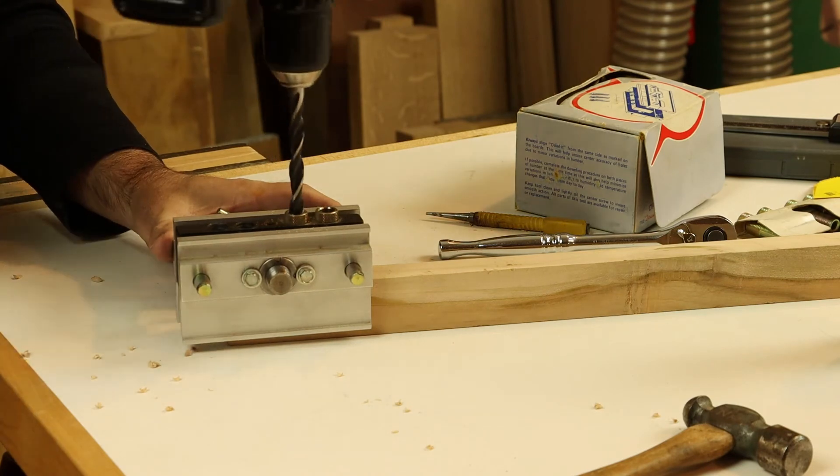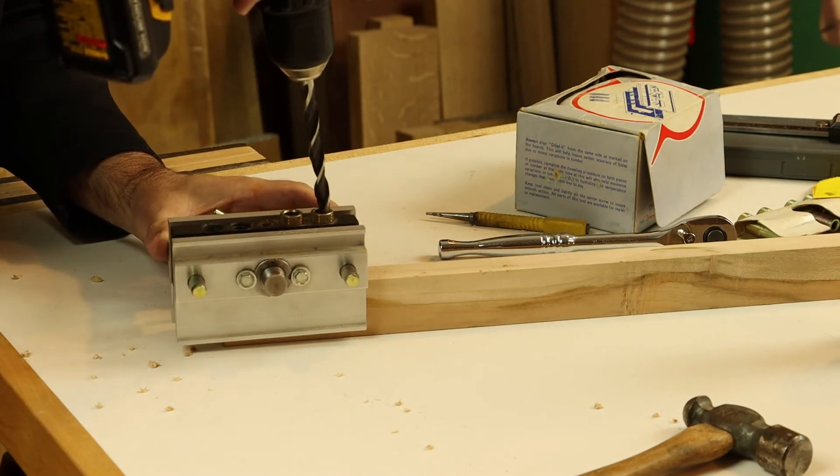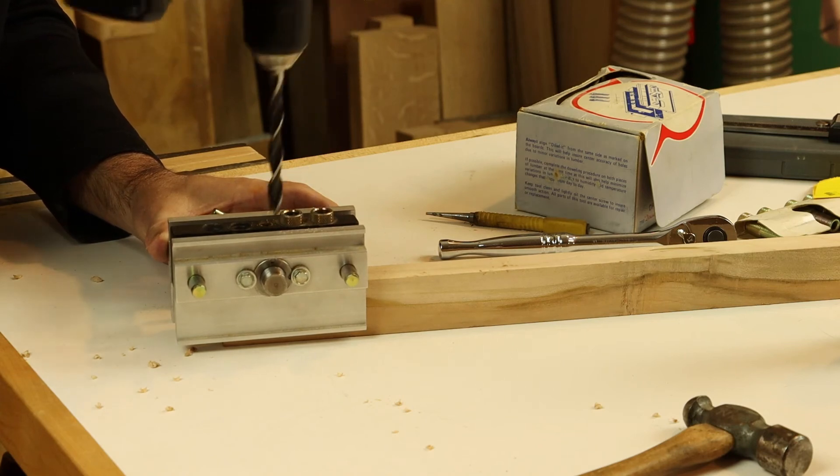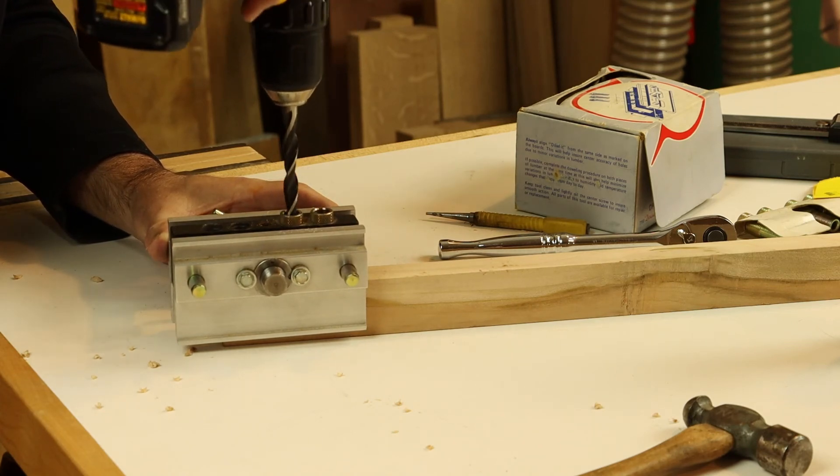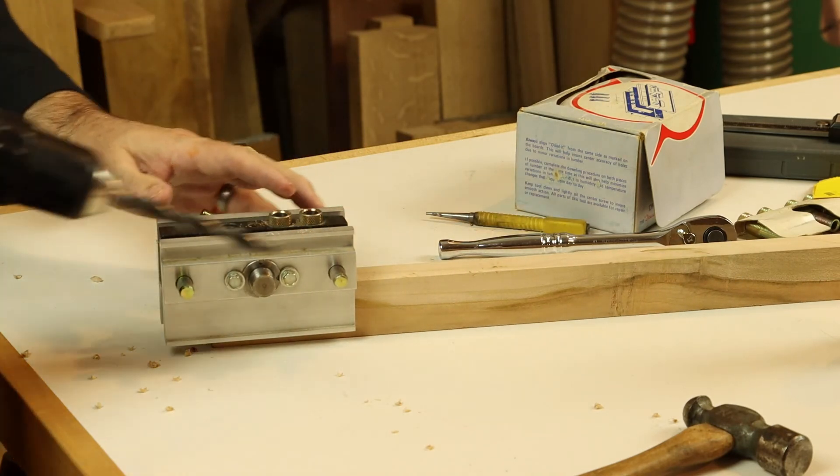When you drill a hole and flip the jig around, you can feel it drops right down into the same hole. Here it stops short, we have no drilled hole here. Without any resistance, it just plunks right down into the same hole. So perfect alignment there.